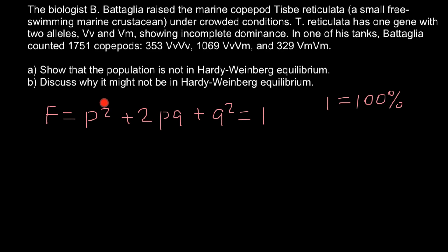Now we have to find the frequency of each genotype. We are given absolute numbers, and this is not frequency, so we have to convert to frequencies. I also want to remind you what incomplete dominance is. Incomplete dominance is a situation when one allele — the dominant allele — is incompletely dominant over the recessive allele.